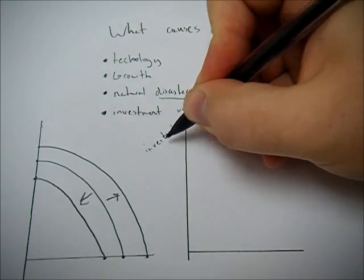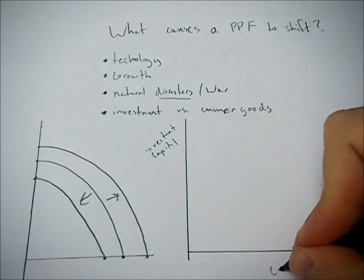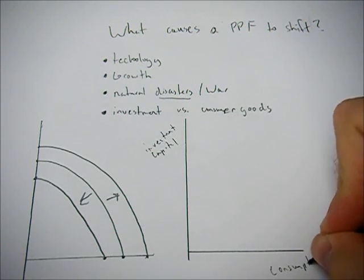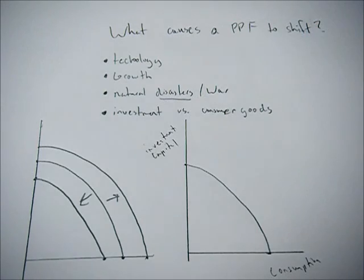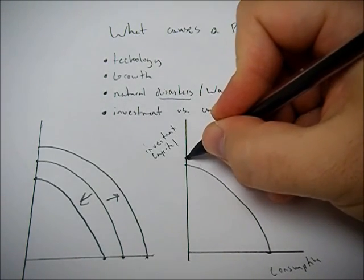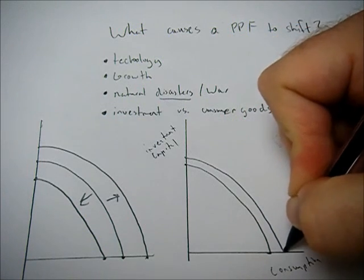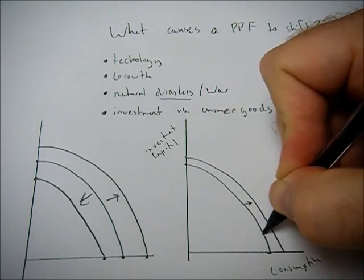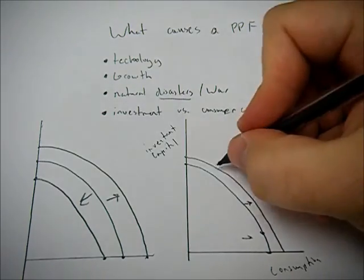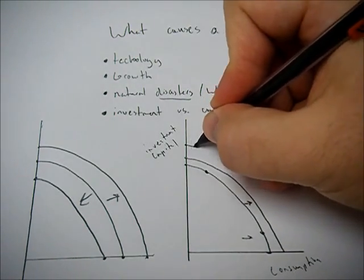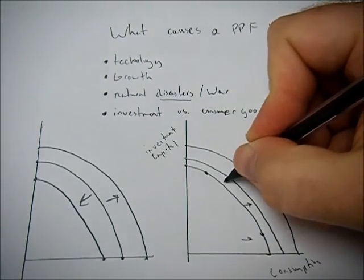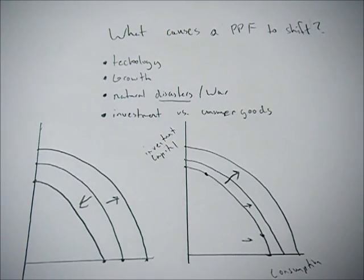Now with the last one, we have investment goods or capital goods versus consumption goods. So if we choose to consume today a lot of consumption goods like jeans and food, then in the next time period, we're going to have a very small shift out, limited growth in the economy. But if we decide to invest a lot, either in technology or factories, then we get a big shift out and we see the PPF shifting out a lot more.